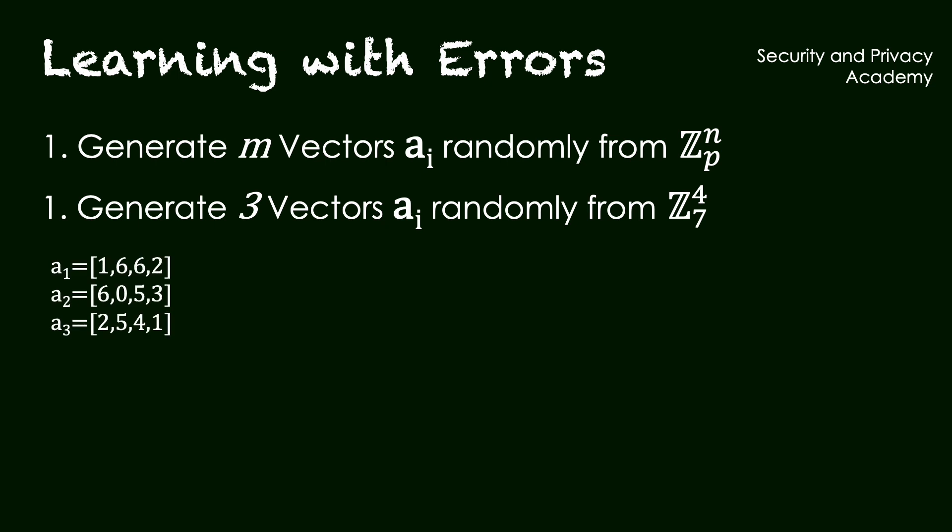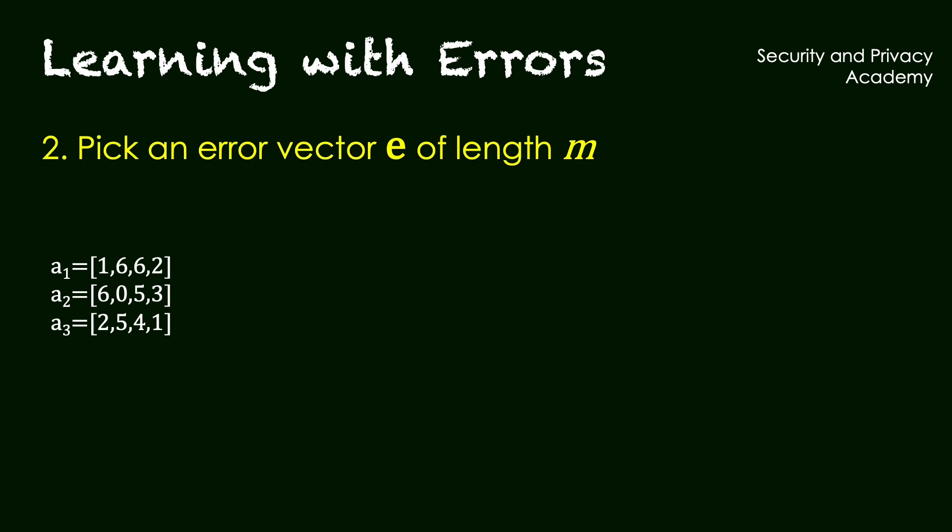As the name of the method suggests, we also need to pick an error. So we have an error vector e, which we choose as 0, minus 1, 1. Now these errors are relatively small, because all of our numbers here are very small. In reality, obviously everything would be much larger.